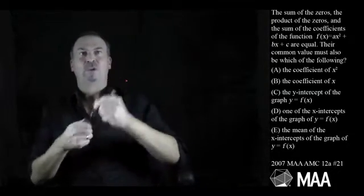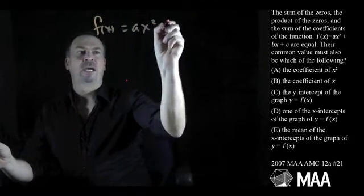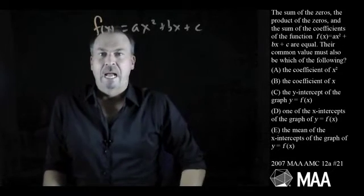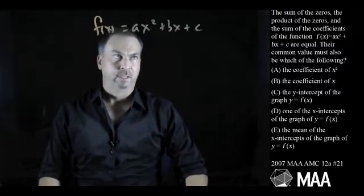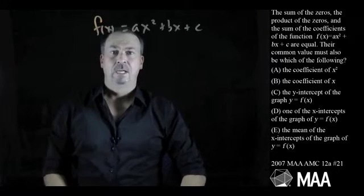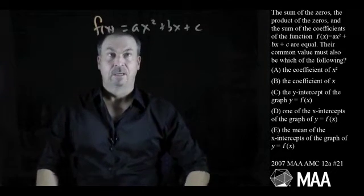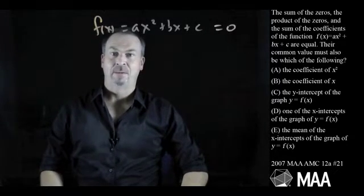Alright, so let's see. Basically we're talking about the quadratic f of x equals ax squared plus bx plus c. And we're being asked about its zeros. The sum of the zeros, the product of the zeros, and the sum of the three coefficients are all equal. Do I even know what the zeros are? Well, let's see.